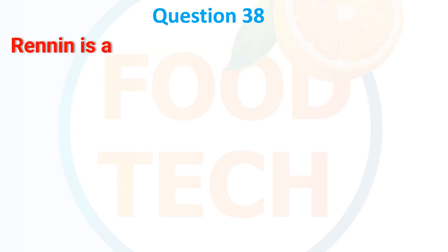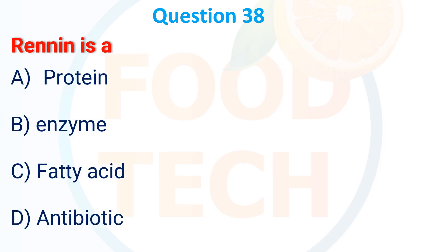Question 38. Renin is: A. Protein. B. Enzyme. C. Fatty acid. D. Antibiotic. The correct answer is enzyme.